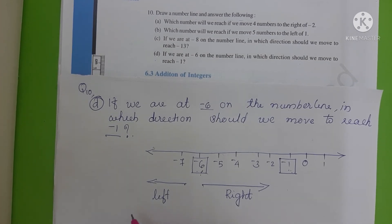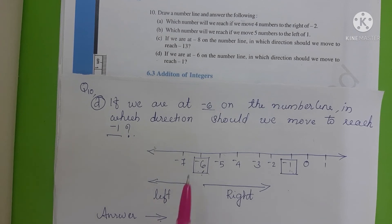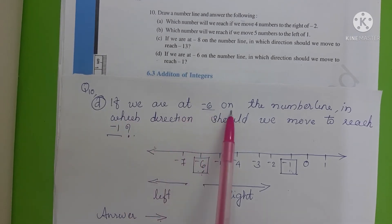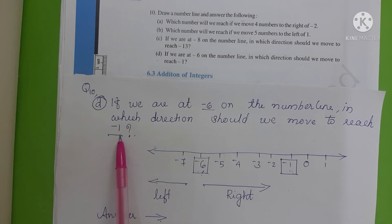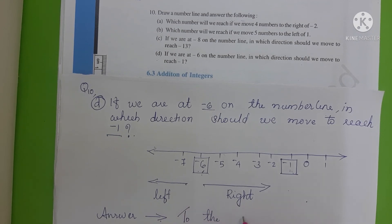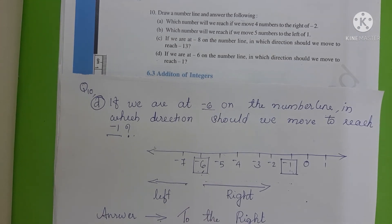The answer will be: to reach minus 1 from minus 6, we move in the right direction. We are at minus 6 on the number line; in which direction should we move to reach minus 1? The answer is to move to the right direction.